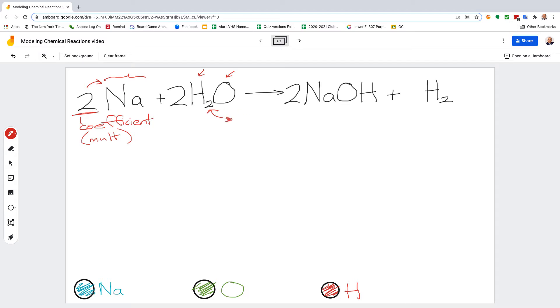These numbers at the bottom are called subscripts, and they tell you how many of the atom next to it there are. For example, this two says that there's two H's. Notice there's no subscript for the O, so that means it's a one. That means there's one O in H2O—one oxygen in water, two hydrogens in water—and that there are two waters on the reactant side of the reaction.